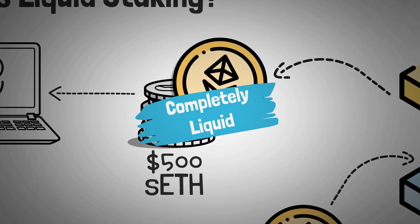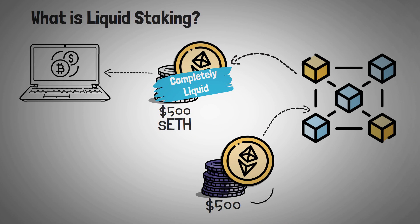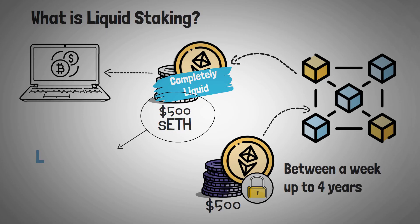Before liquid staking, the $500 was just locked in the platform, and most staking platforms require you to lock up your stake for a week up to four years. These staked ETH tokens, what I call IOUs, are called liquid staking tokens, or LST.